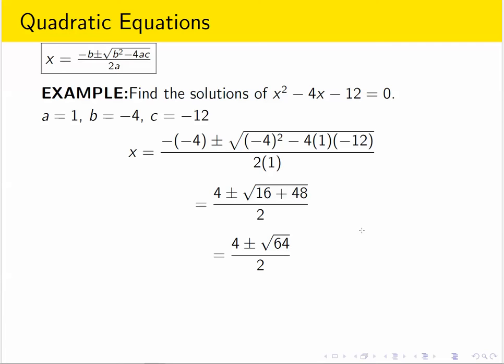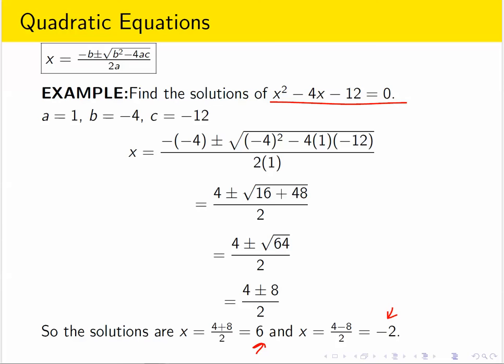64 is a nice perfect square. The square root of 64 is 8. And so now I have two solutions. 4 plus 8 divided by 2 and 4 minus 8 divided by 2. Those simplify to 6 and negative 2. So x equals 6 and x equals negative 2 are the solutions of this equation.